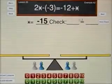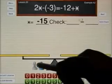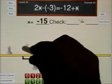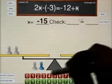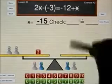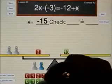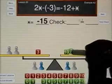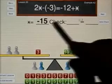To do the check, we'll clear the board and set up the problem one more time. I have 2x and I need to take away a negative 3, so let's add a pair of opposites. Now I can take away negative 3. And on the right side I have a negative 12 plus x. Let's see if negative 15 works.